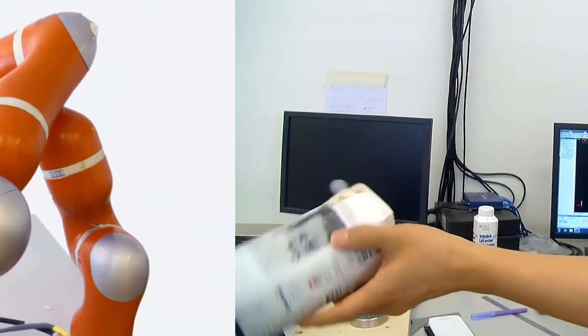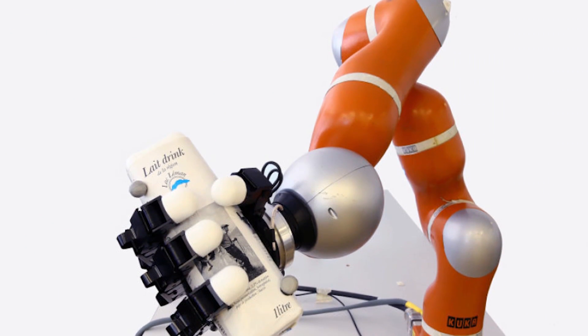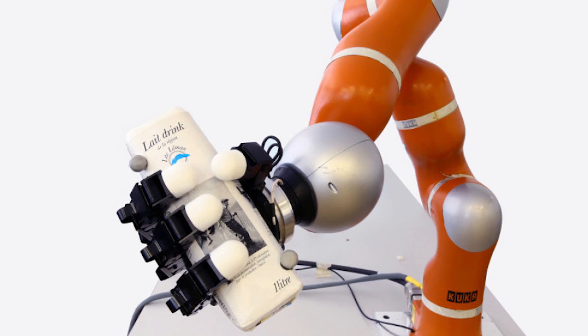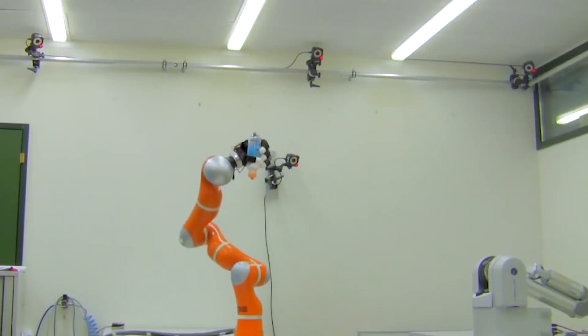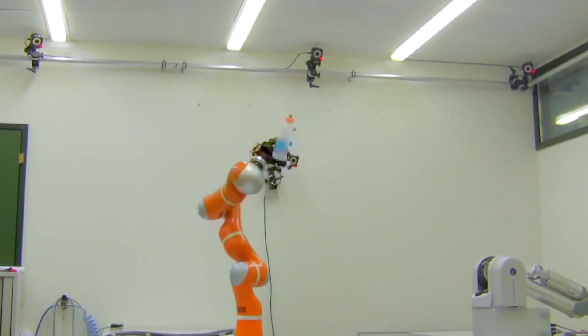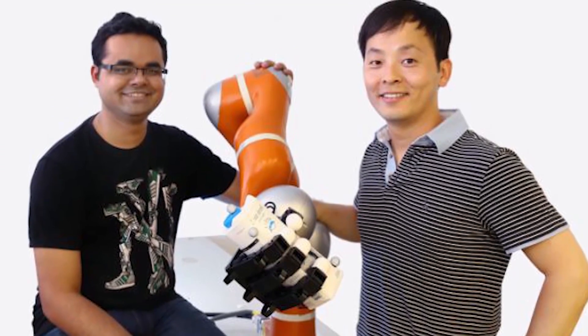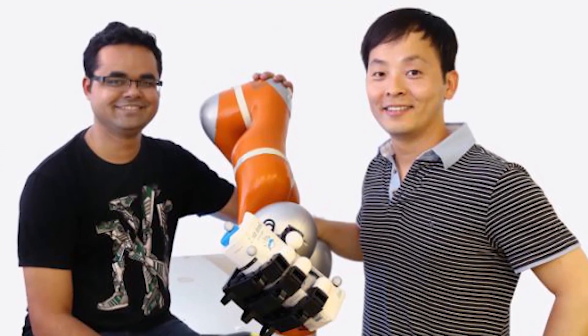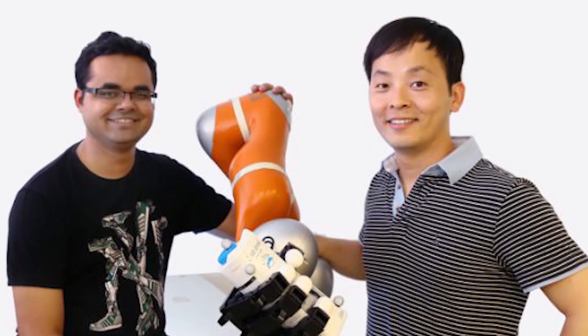Each movement takes a mere five hundredths of a second. In video demonstrations, the robot capably grabs and clutches each object at record speed. The robot arm designers believe that similar devices might be used as a safety device to protect humans from falling objects.